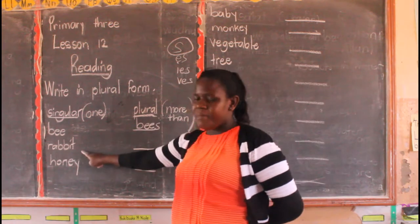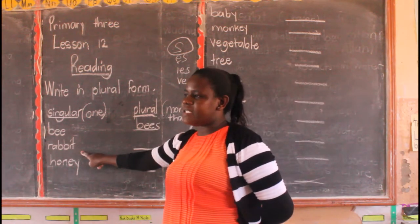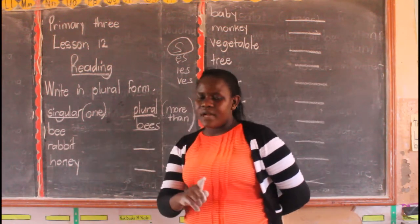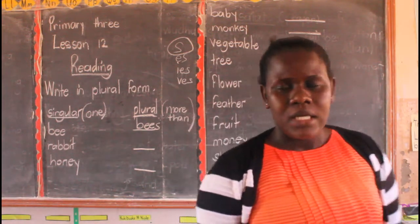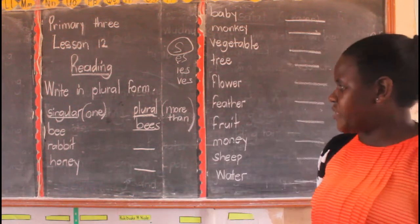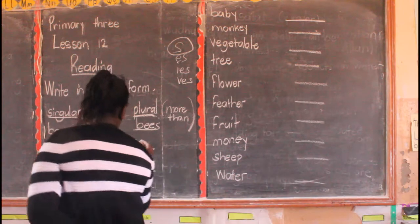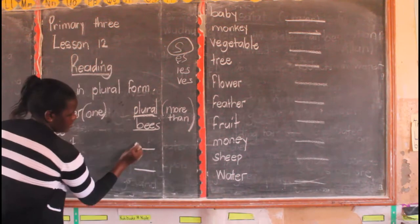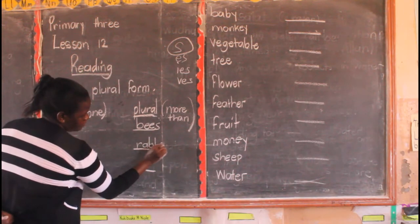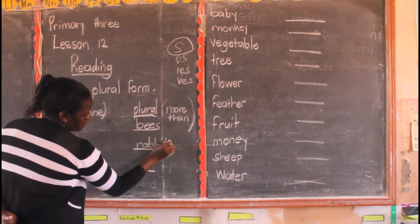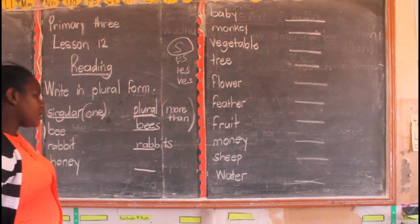Rabbit. What is the plural form of rabbit? One rabbit — if there are two, you say rabbits. Rabbits. Good.